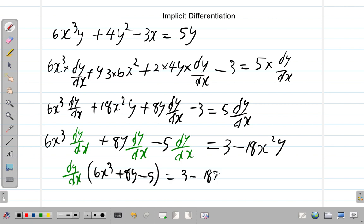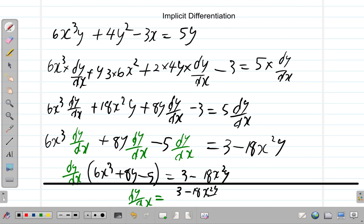And then, finally, we can see that dy by dx equals running out of space now. Let me write it. Let me put a line here. Just to separate these. So, we have 3 minus 18x squared y, all divided by 6x cubed plus 8y minus 5. 6x cubed plus 8y minus 5. That's what dy by dx is equal to.